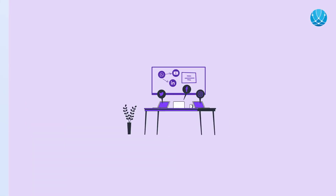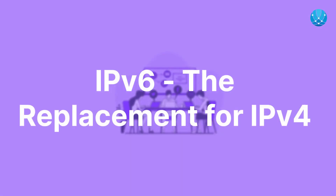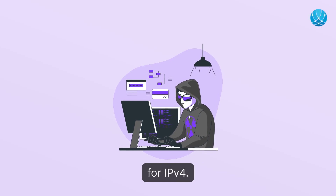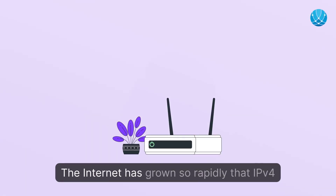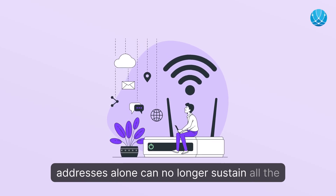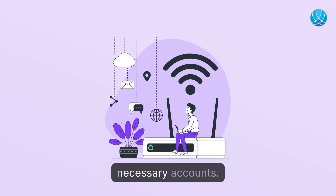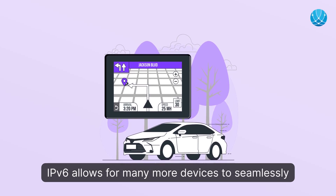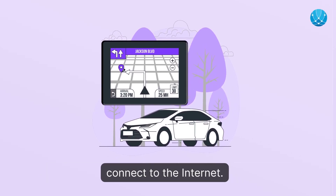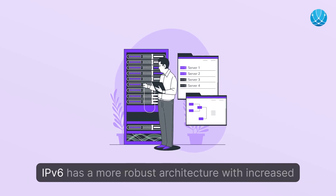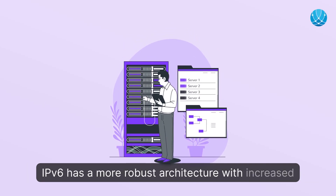Internet Protocol version 6, IPv6, is the replacement for IPv4. The internet has grown so rapidly that IPv4 addresses alone can no longer sustain all the necessary accounts. IPv6 allows for many more devices to seamlessly connect to the internet. Developed by the Internet Engineering Task Force (IETF), IPv6 has a more robust architecture with increased capabilities.